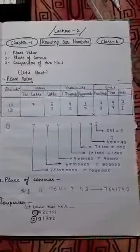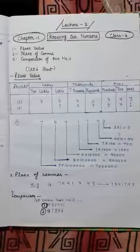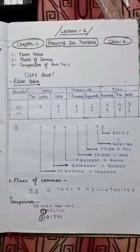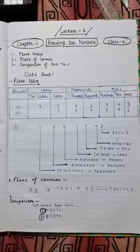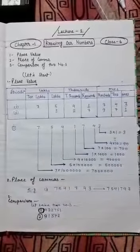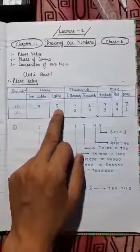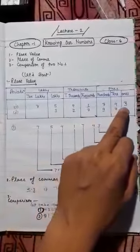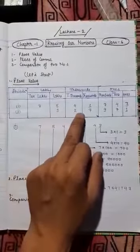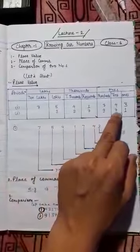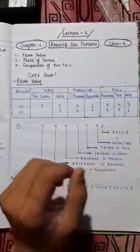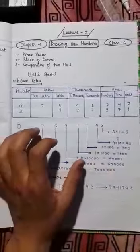So let's start from the place value. To understand place value very easily, I have made a table on the basis of Hindu Arabic number system. I have taken two examples: one is 7541743 and the second number is 327971. Let's discuss about the place value.